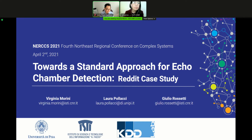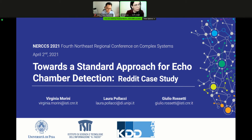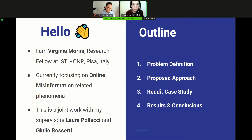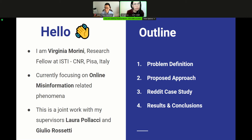Welcome everybody. In this talk I will present our work titled Towards a Standard Approach for Echo-Chamber Detection, a Wikipedia study. My name is Virginia Muni and I'm a Research Fellow at ISTI, CNR and PISA in Italy. I'm currently focusing on online information related to phenomena such as echo-chambers and polarization. This is a joint work with my supervisor, Laura Pollacci and Julia Rossetti.